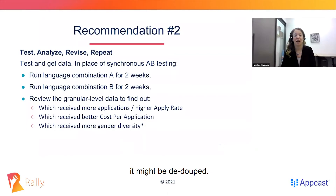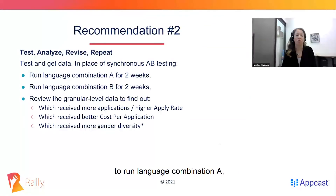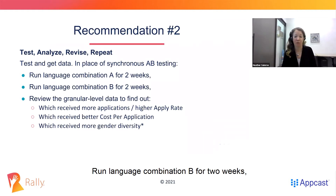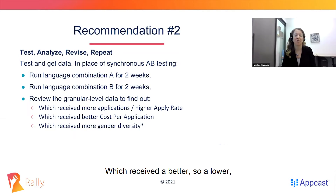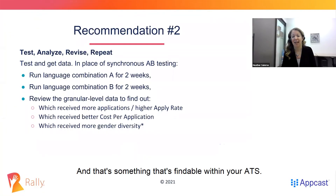So the suggestion or sort of workaround is to run language combination A — choose what you want to test — run that for two weeks, run language combination B for two weeks, and then get into the granular level data to find out which ad received more applications at a higher apply rate, which received a lower cost per application, and which received more gender diversity. And that's something that is findable within your ATS.